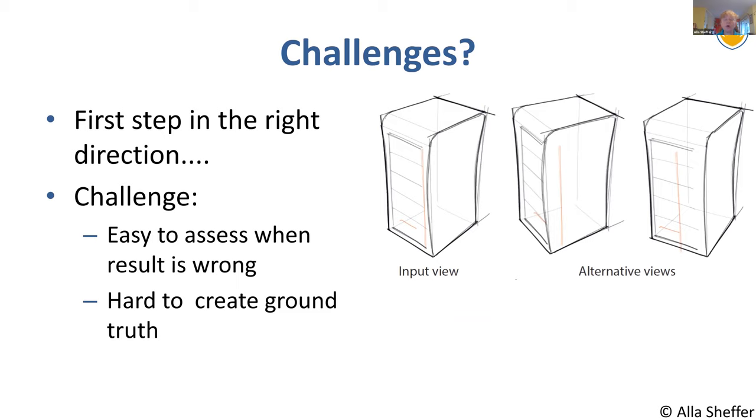However, this is only a first step. Our method is far from perfect. And the challenges are that while as a human, you immediately notice when something is wrong. As a human observer, you'll go, that's really, really wrong. However, how do we get to account for that algorithmically is where the challenge becomes. On the one side, humans are extremely sensitive to errors in the algorithm. On the other side, it's very hard to create ground truth.